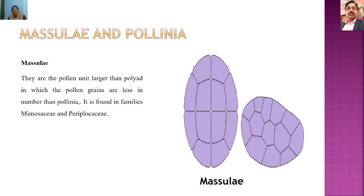The next pollen unit is the massula. Massulae are polyads which have a larger number of pollen grains than typical polyads — the number of cells may reach 132, 164, or more. Massulae are found in families like Mimosaceae and Periplocaceae.